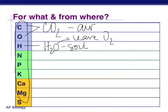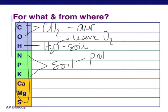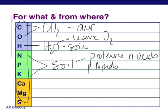Nitrogen, phosphorus, and potassium are all going to come from the soil — dissolved minerals in water. We're going to use them to make proteins, nucleic acids, phospholipids for those cell membranes that we so desperately need, and to make enzymes. So they're really, really important.